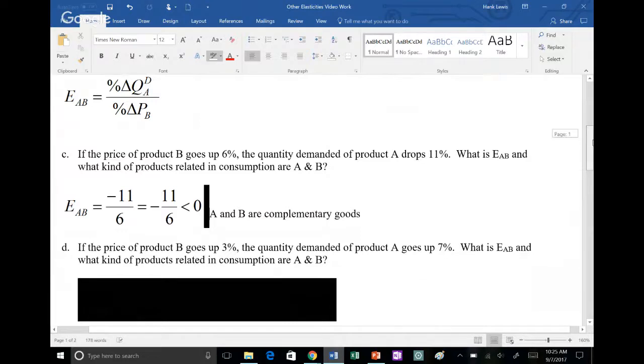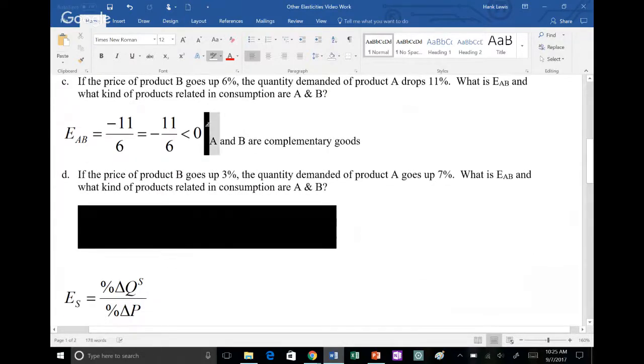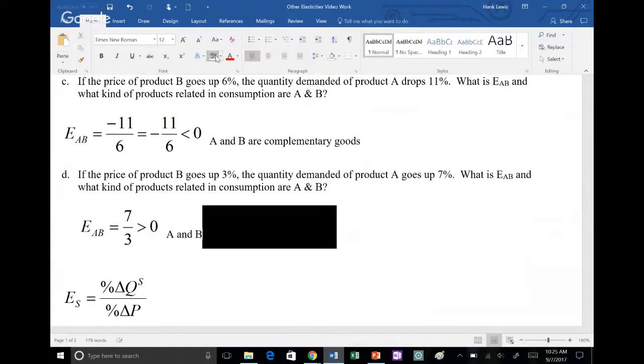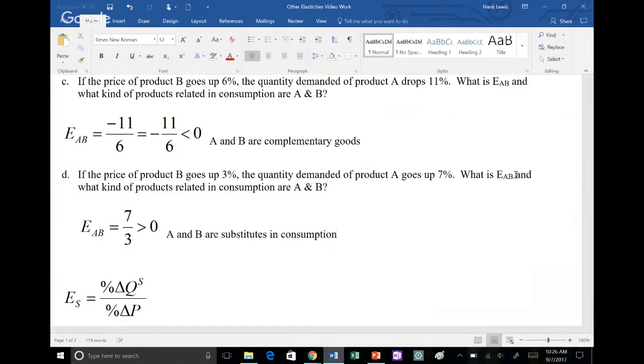For part D, it's also asking for E sub AB. It says the price of product B goes up 3%, the quantity demanded of product A goes up 7%. Notice they both go up, so that means the sign on both of them is positive. We're going to plug those in that formula again. You're going to have positive 7 over 3. That doesn't reduce. Please, no decimals, just stick with the fraction. Since E sub AB is positive, the price of B goes up, people buy more A. That means they're using A in the place of B. They are substitutes in consumption.